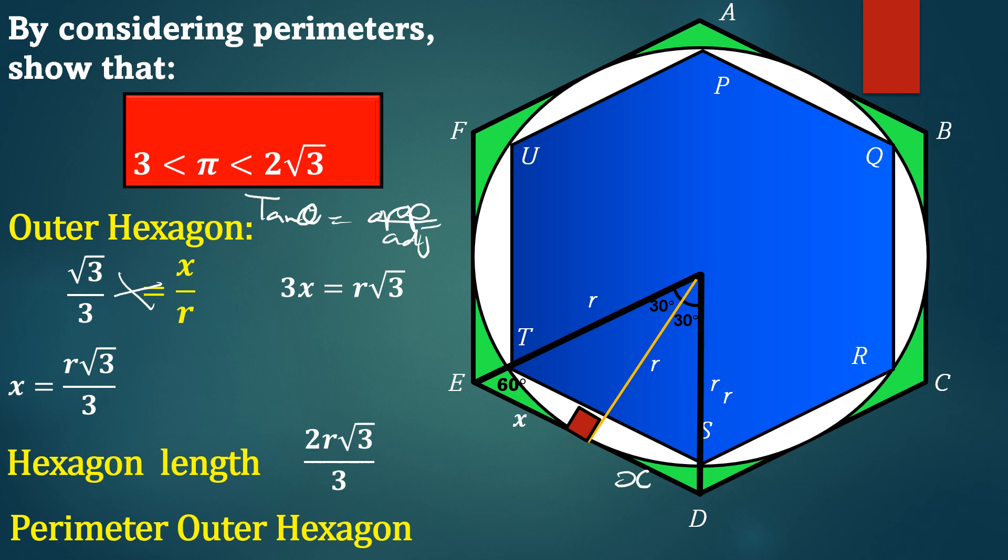The total perimeter of the outer hexagon, it is simply 2r root 3 divided by 3 times 6. This will simplify to 4r root 3.